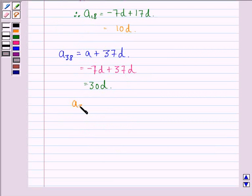So A₃₈, the 38th term, equals 3 × 10D, and 10D is the 18th term. Therefore, A₃₈ = 3 × A₁₈.